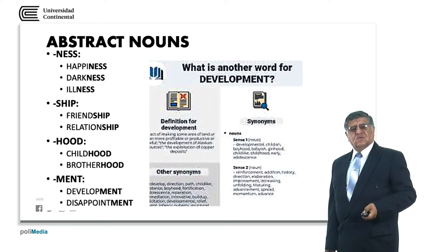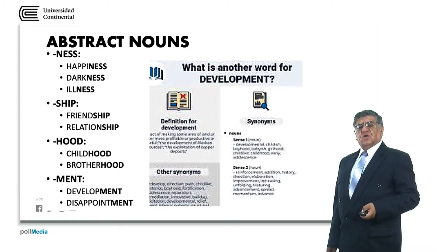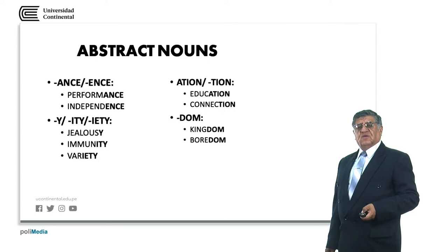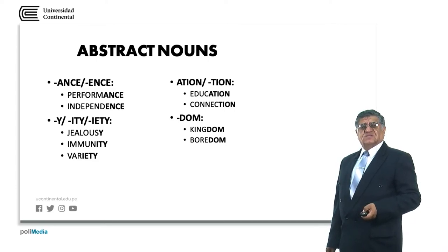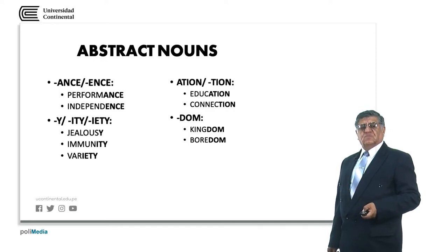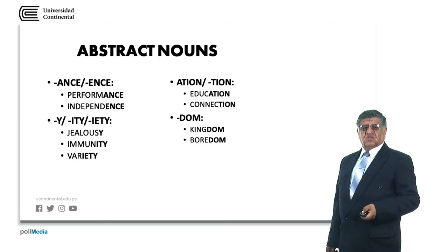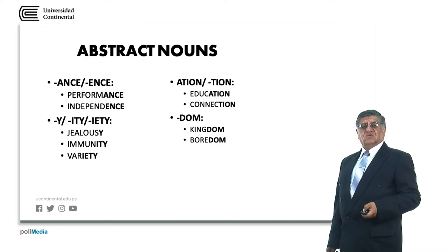Development is the quality of develop. Disappointment is the quality of disappointing. We also have abstract nouns formed by adding -ance, -ence, -ity, etc. Performance refers to how one performs — what the way of performing results in. Independence: independent becomes independence. Jealousy: jealous becomes jealousy. Immune becomes immunity. Variety: vary or varied becomes variety.